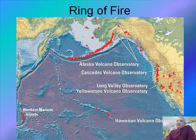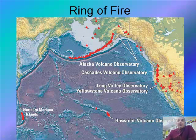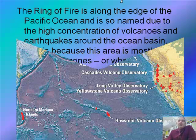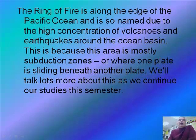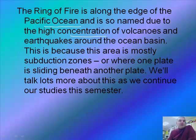Here's a very important thing to understand: there's something called the Ring of Fire. When we plot a graph of where all the volcanoes in the world are, we discover that they are surrounding continental plates, and you can kind of see a ring of fire. The Ring of Fire is along the edge of the Pacific Ocean and is so named due to the high concentration of volcanoes and earthquakes around the ocean basin. It's because the area is mostly a subduction zone, where one plate is sliding beneath the other.